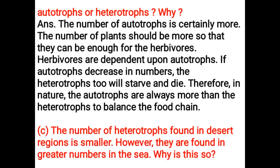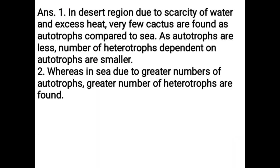The number of heterotrophs found in desert regions is smaller; however, they are found in greater numbers in the sea. Why is this so? In desert regions, due to scarcity of water and excess heat, very few cacti are found as autotrophs compared to the sea. As autotrophs are less, the number of heterotrophs dependent on autotrophs is smaller. Whereas in the sea, due to greater numbers of autotrophs, a greater number of heterotrophs are found.